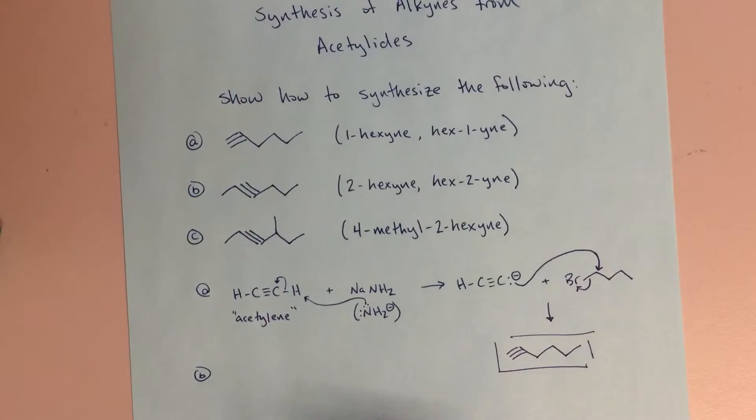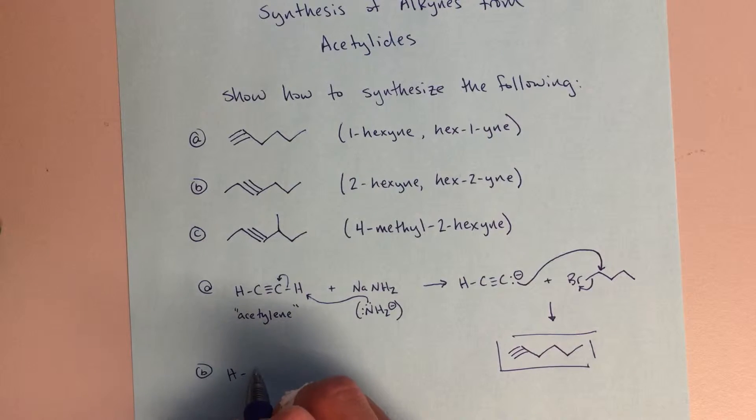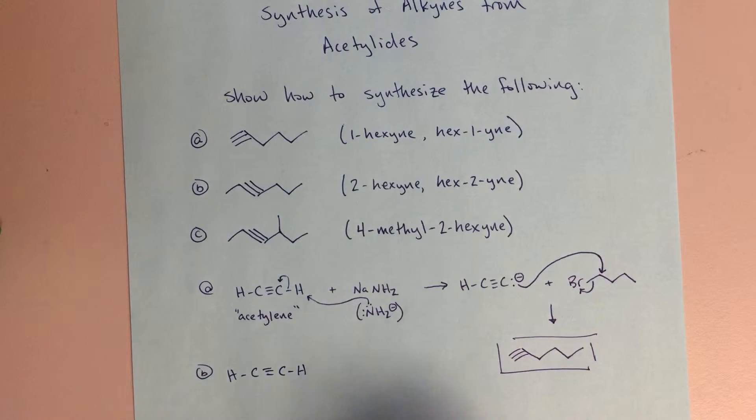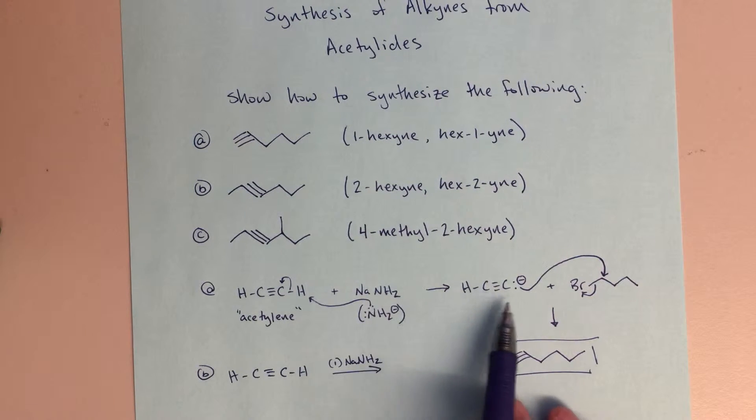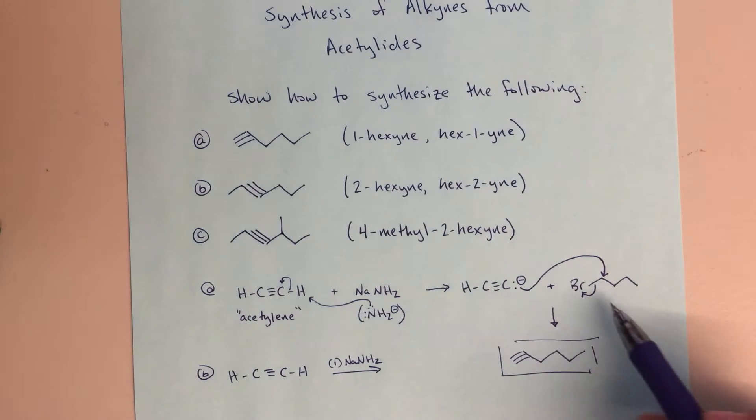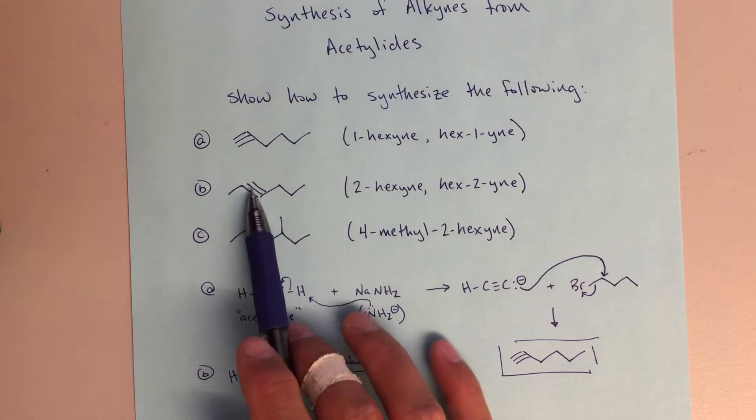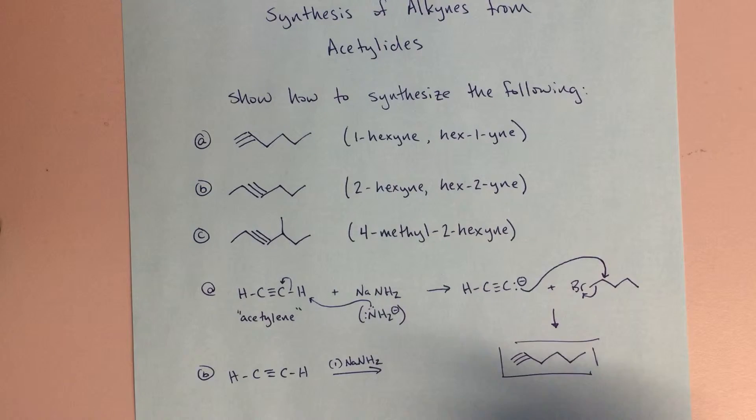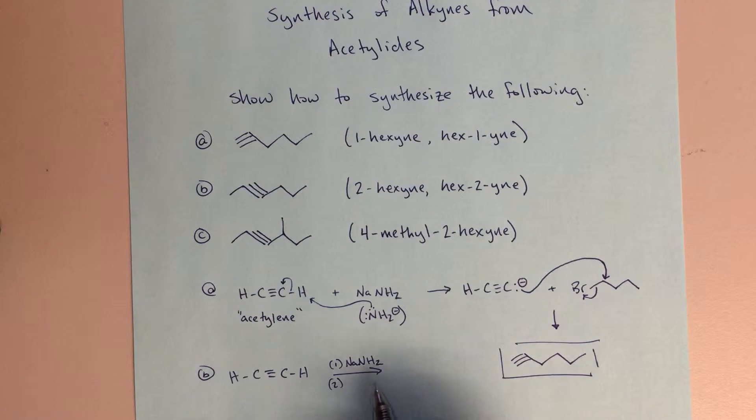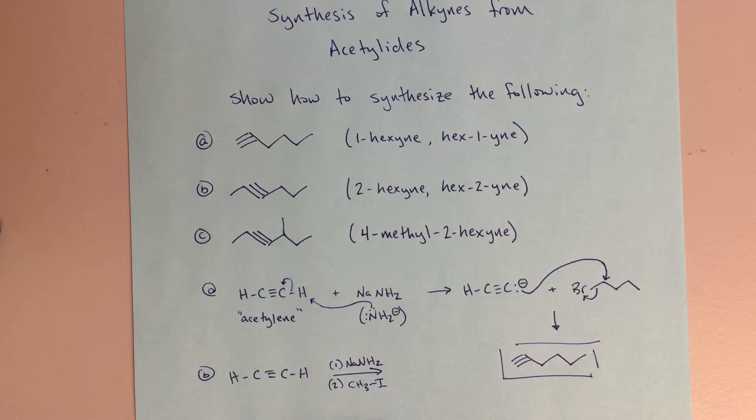Let's look at B. Again, if I want to start from acetylene, I can react that in step one with sodium amide. That's going to end up giving me this acetylide ion, and then that acetylide ion I'm going to want to react with some alkyl halide. This one I noticed I've got an internal alkyne, so I'm going to actually have to do this twice. I can say step one: sodium amide. Step two: let's do methyl iodide first.